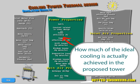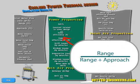Tower efficiency, expressed in percentage: in simple terms, this number tells us how much of the ideal cooling is actually achieved in the proposed tower. More technically, it is equal to the range divided by the range plus approach.